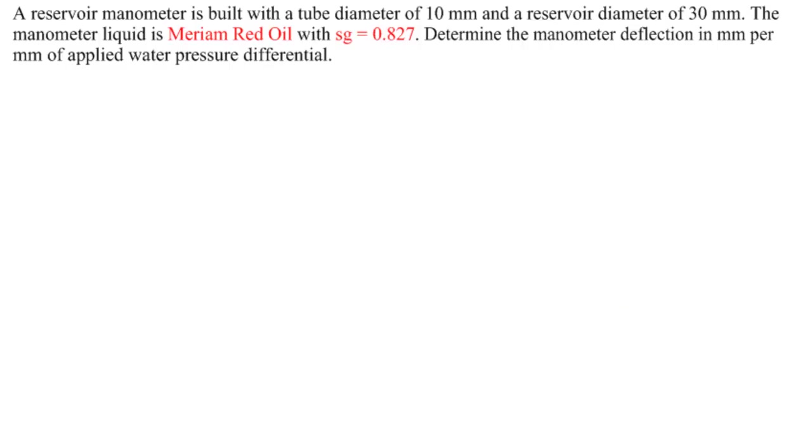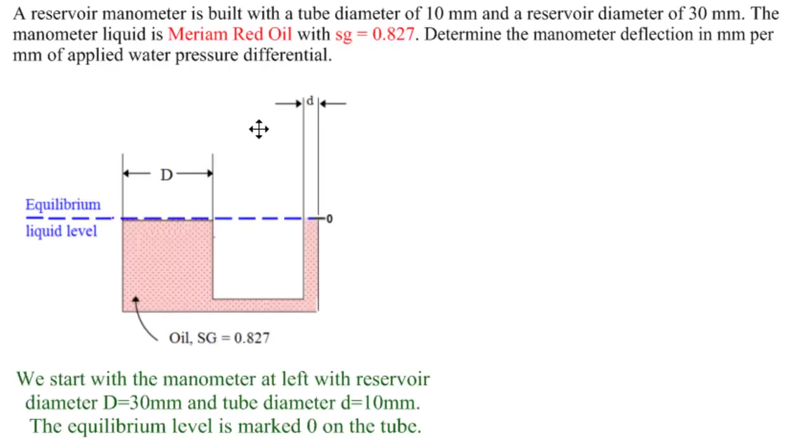Our first step is to dissect the problem. We have a reservoir manometer with a tube diameter of 10 and a reservoir diameter of 30. We start with a manometer with no pressures attached. It's at equilibrium level, so the oil is at the same level in both reservoirs. The zero point in the tube reservoir is marked, and remember that this is the part that we actually see when we're working.